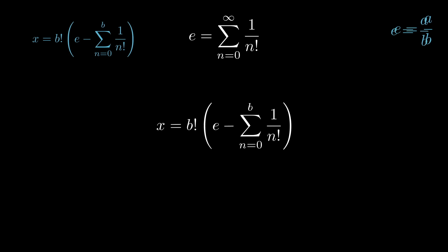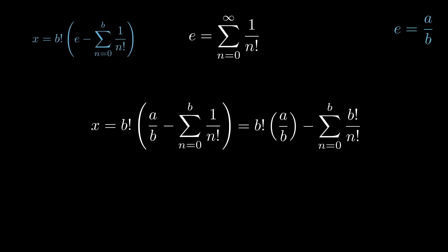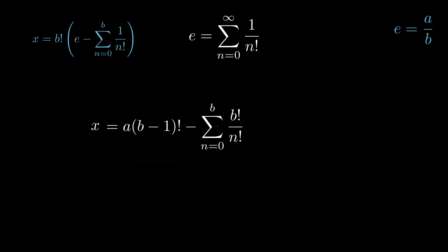Let's first substitute in our assumption that e is that rational a over b. We can distribute this b factorial to both terms and do some canceling as well. What should we notice here? Well, remember b is a positive integer itself, so this first quantity is going to be an integer, and this sum is going to be an integer as well.